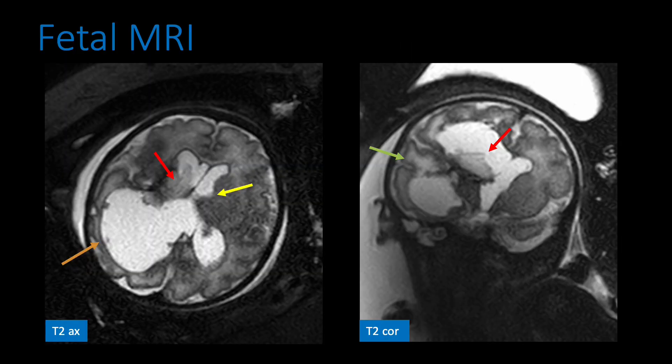Our patient presented for fetal MRI for further characterization of an abnormality noted on 20-week anatomic ultrasound examination. T2-weighted axial and coronal images demonstrate marked right ventriculomegaly with porencephalic changes along the posterior horn of the right lateral ventricle. There is grade 4 right and grade 1 left germinal matrix hemorrhage with right-sided cystic periventricular leukomalacia.